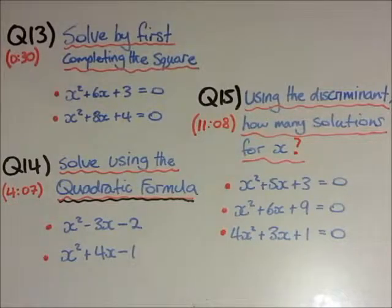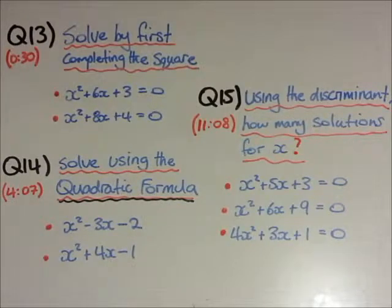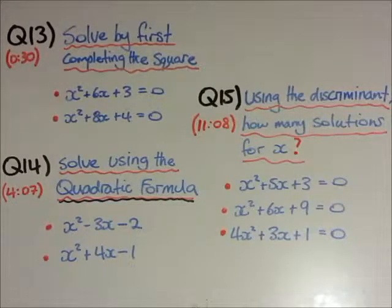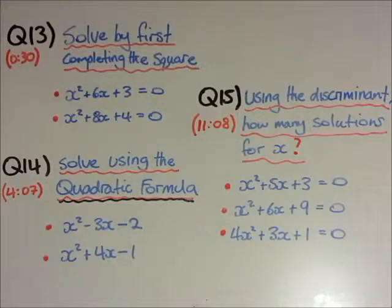Hi everyone. In this video we have two questions — question 13 and 14 — where we're solving quadratics using completing the square and then the quadratic formula, which is a good question, question 14. And then in question 15 we're looking at seeing how many solutions are in these quadratics using the discriminant law. So three questions; feel free to skip to the question you're interested in, which is shown in red.